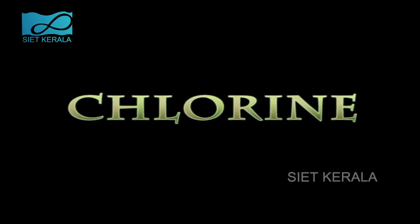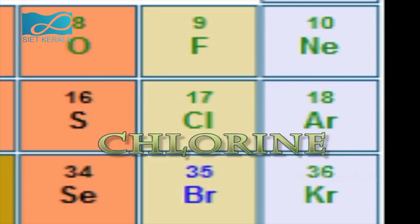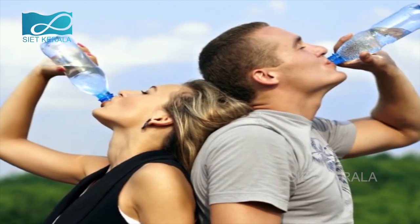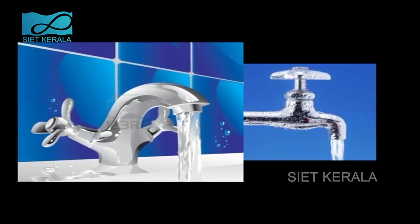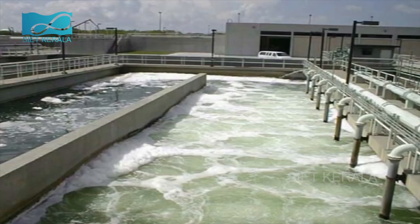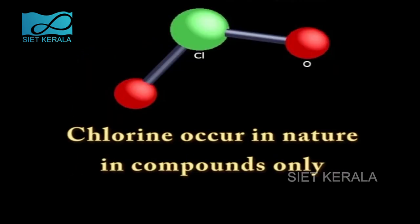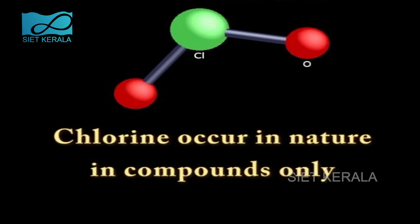Chlorine is the 17th group element in the periodic table and is the most important one in that group. It is the most useful element in daily life. We use chlorine mainly for the purification of drinking water. The peculiar smell and taste of tap water is due to dissolved chlorine added as part of its purification process. It is the oxidizing action of chlorine that makes water free of germs. Chlorine forms diatomic molecules.